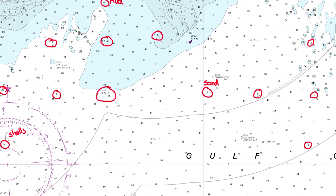Down here we've got three things making it up — the 'S' for sand, the 'SH' for shells, and a new one: 'CO' meaning coral. More shells over here, more sand, shells and coral over here. Here we've got some more sand and shells. Down here is just plain sand, more plain sand.